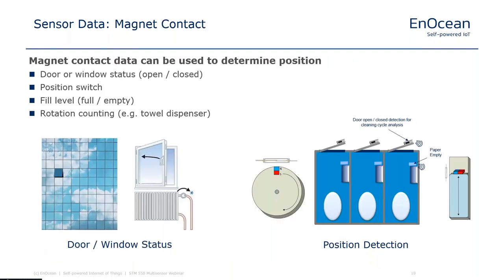Magnet contacts are typically used to detect if doors or windows are open or closed, allowing you to automatically switch off ventilation or lower heating when a window is opened. Additionally, they can detect position by attaching a small magnet to items you want to monitor — such as the rotating wheel in a towel dispenser or the level in a soap dispenser — and report different status information accordingly.